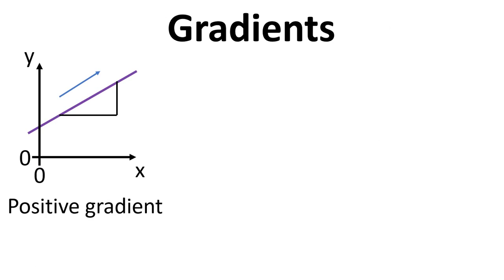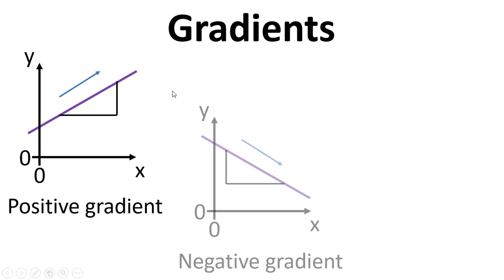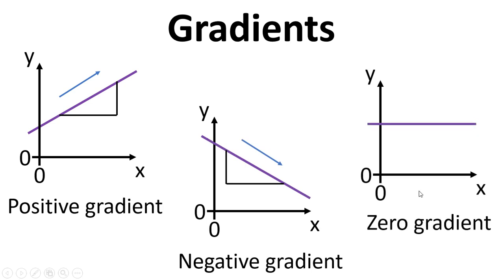And we talked about gradients, that if we've got a positive gradient then the line is sloping upwards, negative gradient the line is sloping downwards as we go from left to right, and for zero gradient that's when we just have a flat straight line, so this is just horizontal.